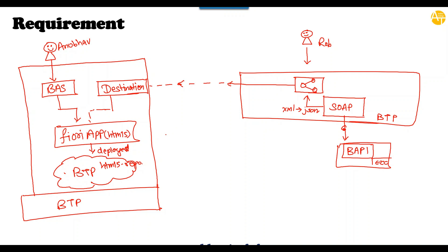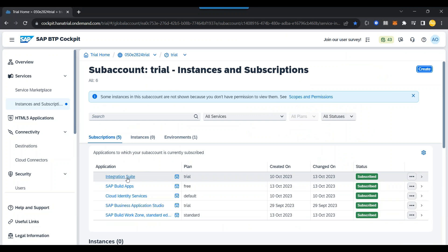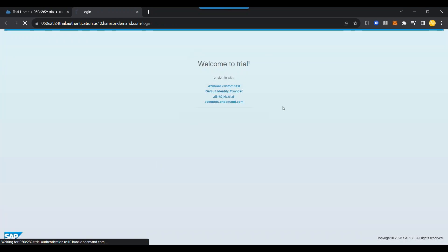That is our use case. Before I delve into building our Fiori application and the destination for connectivity, I will quickly show the API. Today's session is mainly focused on understanding the requirement. Let me switch over back to my BTP account and open the Integration Suite.